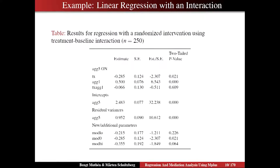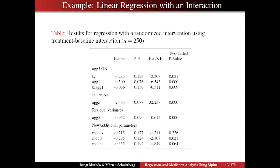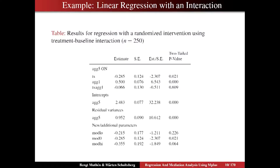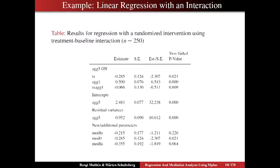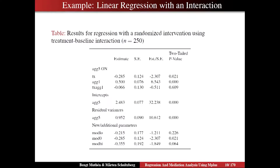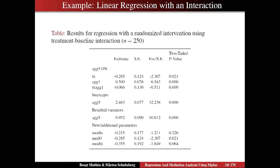Let's look at the output. The first column has the names of the regression and parameters — ag5 regressed on TX, the intercept, residual variance, and the three new parameters from the model constraint. The second column is the point estimate, followed by the standard error, the estimate divided by the standard error (corresponding to a Z-score if normal assumptions are met), and the p-value. The treatment effect and the baseline aggression effect on ag5 are significant at the 5% level, but the interaction variable is not significant — so there seems to be no significant interaction effect.